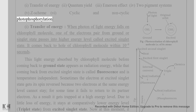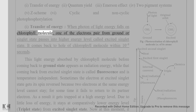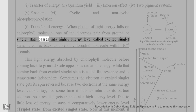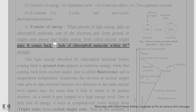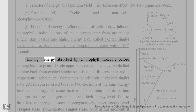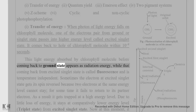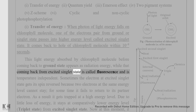Regarding the transfer of energy: when a photon of light energy falls on a chlorophyll molecule, one of the electron pairs from the ground or singlet state passes into a higher energy level called the excited singlet state. It comes back to the whole chlorophyll molecule within 10⁻⁹ seconds. The light energy absorbed by the chlorophyll molecule before coming back to ground state appears as radiation energy, while that coming back from excited singlet state is called fluorescence and is temperature independent.